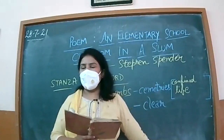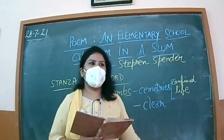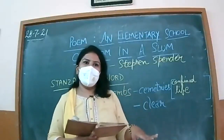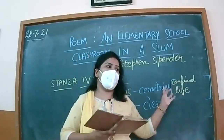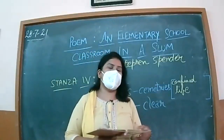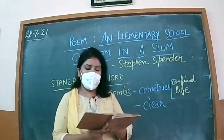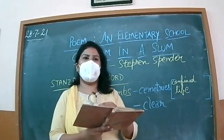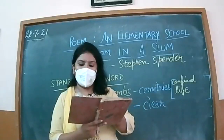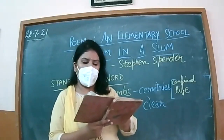Catacomb here also means the boundary of the slum area. These children are living in the slum area, have always lived there, and there is no change because nobody is coming forward to help them. There is no chance of their upliftment or reformation. That is why their windows are like shutting their lives like catacombs — they cannot come outside. The poet says: 'till they break the town and show the children to green fields and make their world run azure on gold sands.'